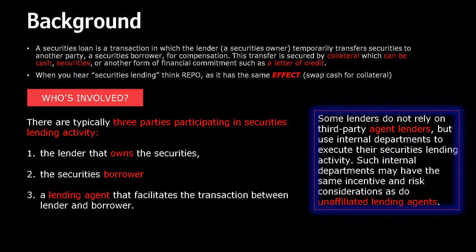Background: a securities loan is a transaction in which the lender, or the securities owner, temporarily transfers securities to another party — a securities borrower — for compensation. This transfer is secured by collateral, which can be cash, securities, or another form of financial commitment such as a letter of credit. It's a common misconception that it's simply cash for collateral. The collateral can be cash and it can also be securities, so you can mix up the cash and the collateral — they can technically be the same thing.